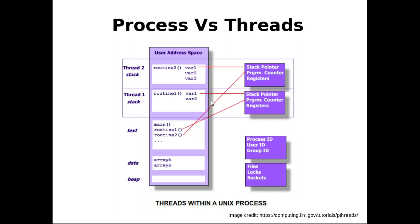However, for threads, since multiple threads access the same data segment, thread one can write to array A and thread two can also write to the same array A in the same memory location. Hence, shared memory communication between two threads is much easier. In the case of threads, we don't have to create extra shared memory to perform this communication. So shared memory programming using threads will have less overhead than in the case of multiple processes.